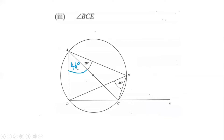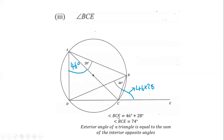Since we already know both angles — 46 degrees from part two and 28 degrees which was given — the total of these equals angle BCE. So it would be 46 plus 28 degrees, giving us 74 degrees. Angle BCE is equal to 46 degrees plus 28 degrees, which equals 74 degrees. The reason is that the exterior angle of a triangle equals the sum of the two interior opposite angles.